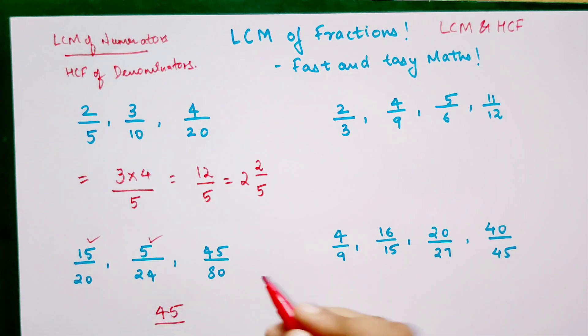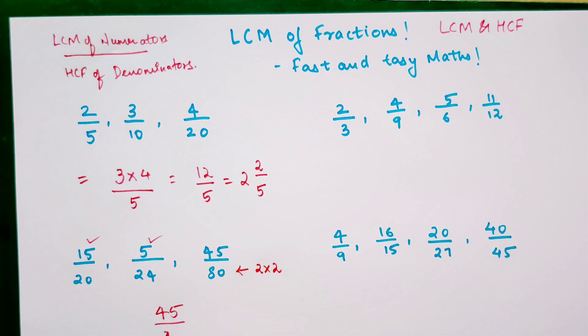And your LCM over here, now you look, all of these are even numbers. So definitely your HCF can be 2. But if you look, all of them are getting divided by 4. So basically 2 into 2 is your HCF in your denominator. So your final answer will be 45 upon 4, which when converted into a mixed form you get 11 and 1 by 4.